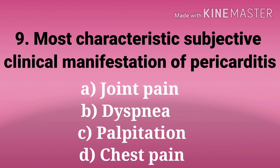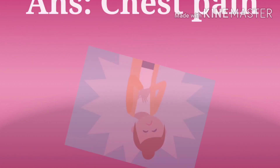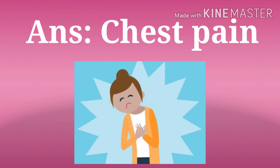The ninth question: most characteristic subjective clinical manifestation of pericarditis. The options are joint pain, dyspnea, palpitation, and chest pain. The answer is chest pain. Chest pain — that is pericardial pain — is seen in pericarditis. Pericarditis is the inflammatory disease of the pericardium.